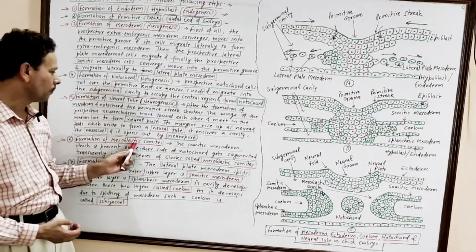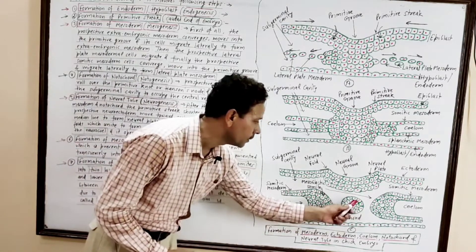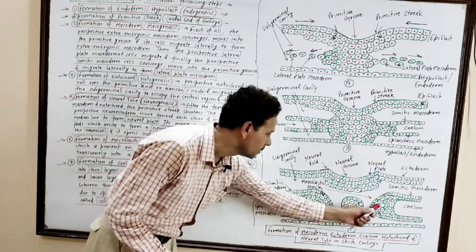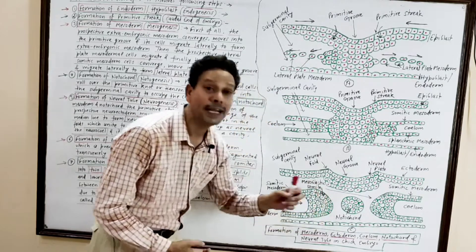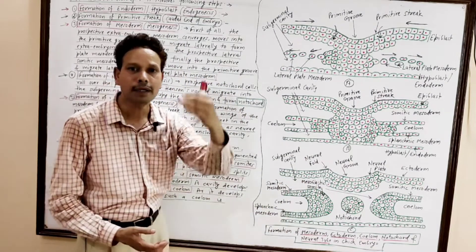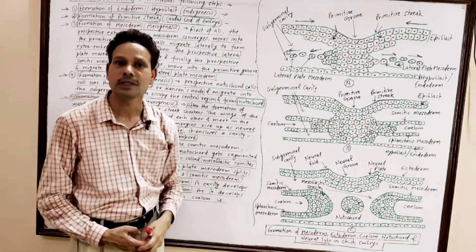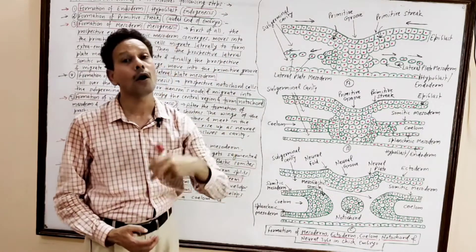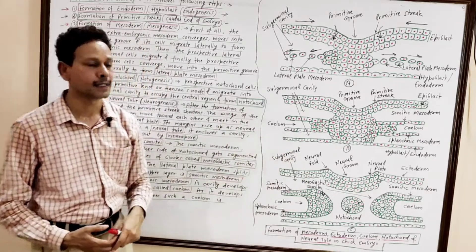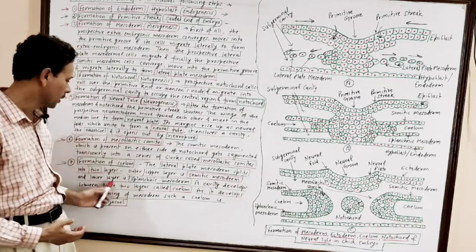Next is formation of mesoblastic somites. On both sides of the notochord, in the central region, the mesoderm gets segmented transversely to produce paired blocks called somites — these are mesoblastic somites.